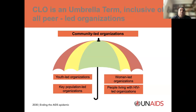Community-led organizations is in itself an umbrella term. Under that umbrella you have youth-led organizations, key population-led organizations — which can be further split out into female sex worker-led, male sex worker-led, MSM-led organizations — women-led organizations, and people living with HIV-led organizations. It's a very diverse group, but the key thing is that it is led by those communities themselves with all the mechanisms I just described.